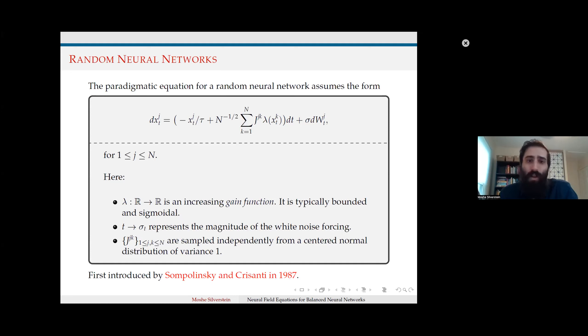Next we can introduce models with random structure. The prime example is the equations introduced by Sompolinsky and Crisanti in 1987. Here, connection strengths between neurons are sampled independently from a centered normal distribution of variance one. These are then multiplied by a nonlinear gain function, typically a bounded sigmoidal function. The J_jk terms represent the strength of the network connections between neurons and are explicitly not symmetric in this case.